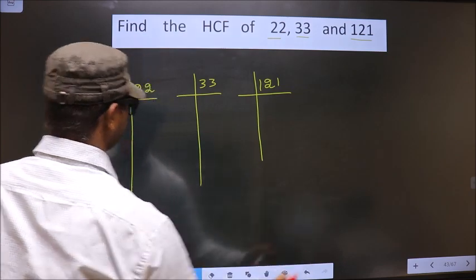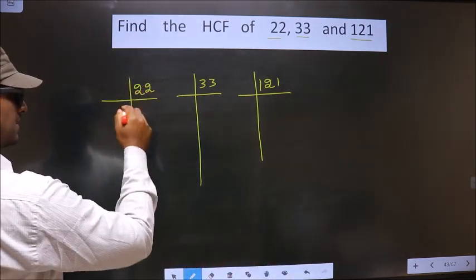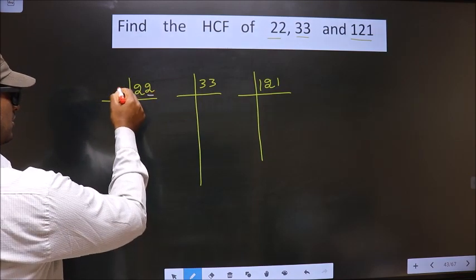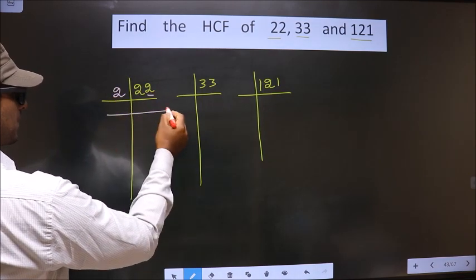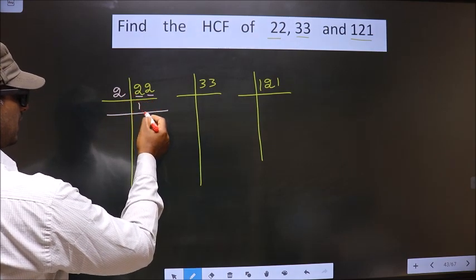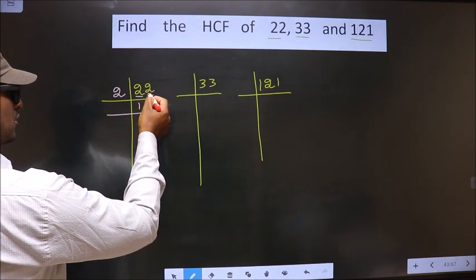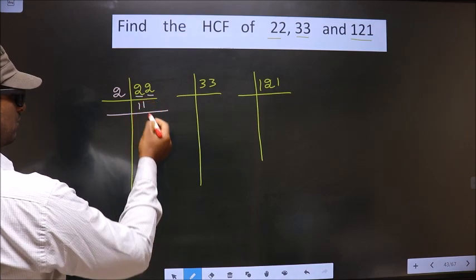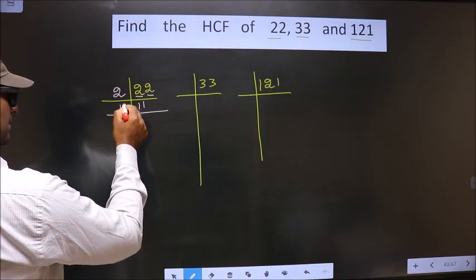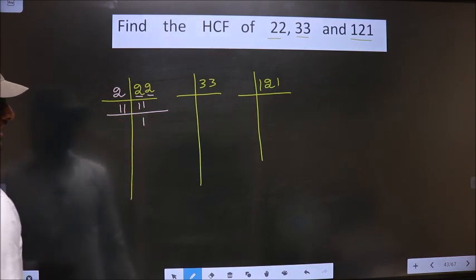Now, for this number last digit is 2 which is even. So we take 2 here. Now, first number is 2. When do we get 2 in 2 table? 2, 1, 2. Next number is 2. When do we get 2 in 2 table? 2, 1, 2. Now, here we got 11. 11 is a prime number so we take 11 and 1.